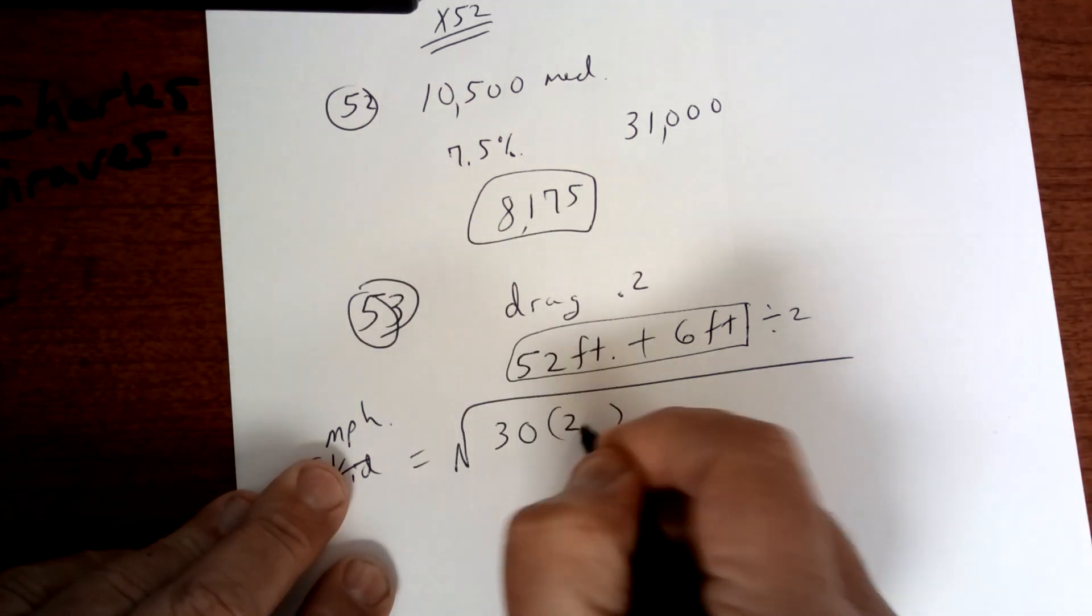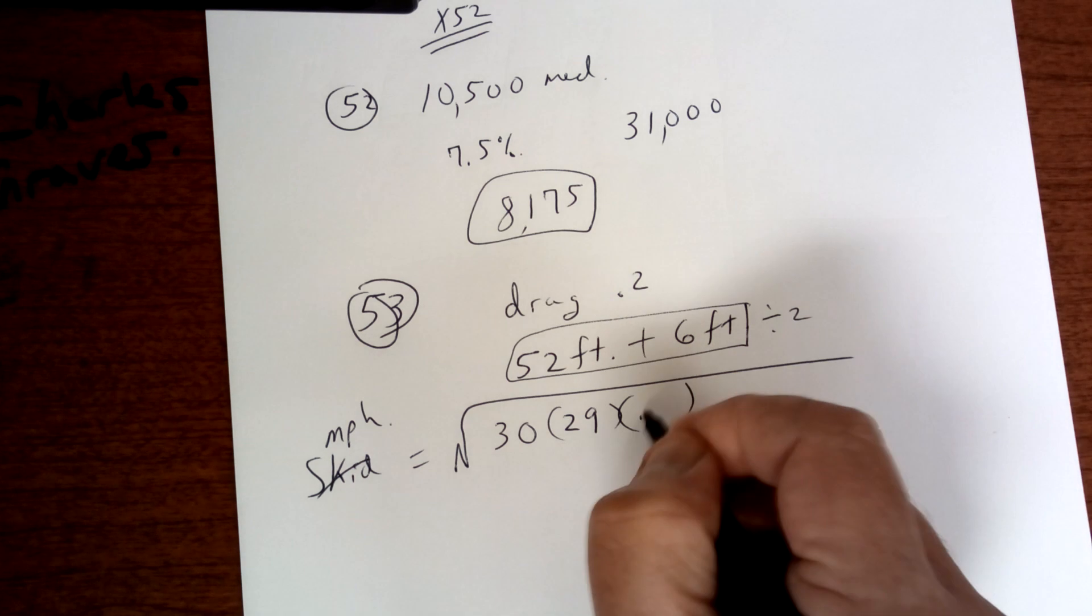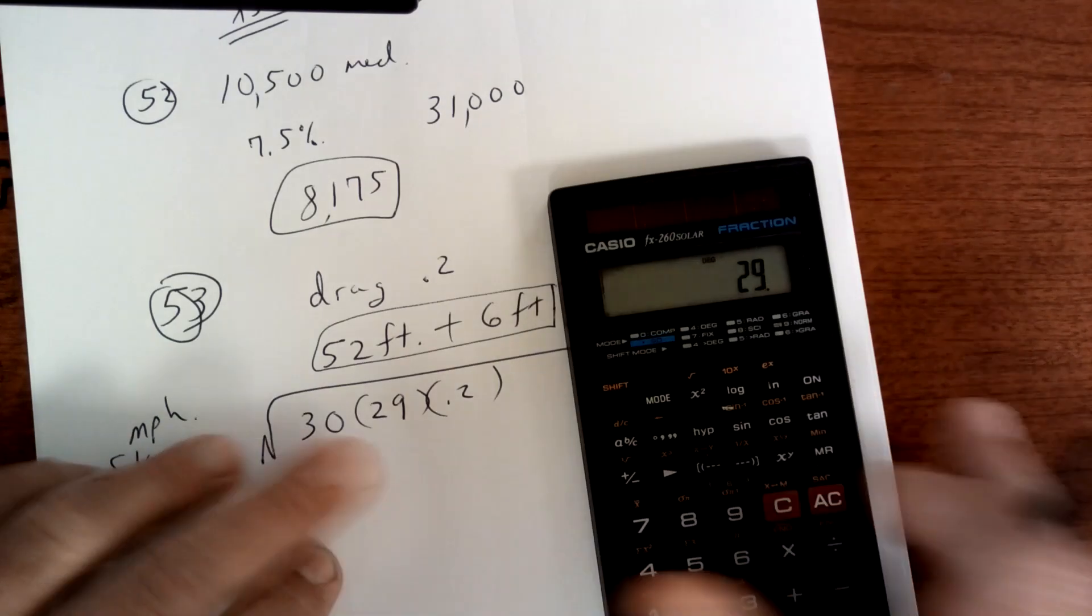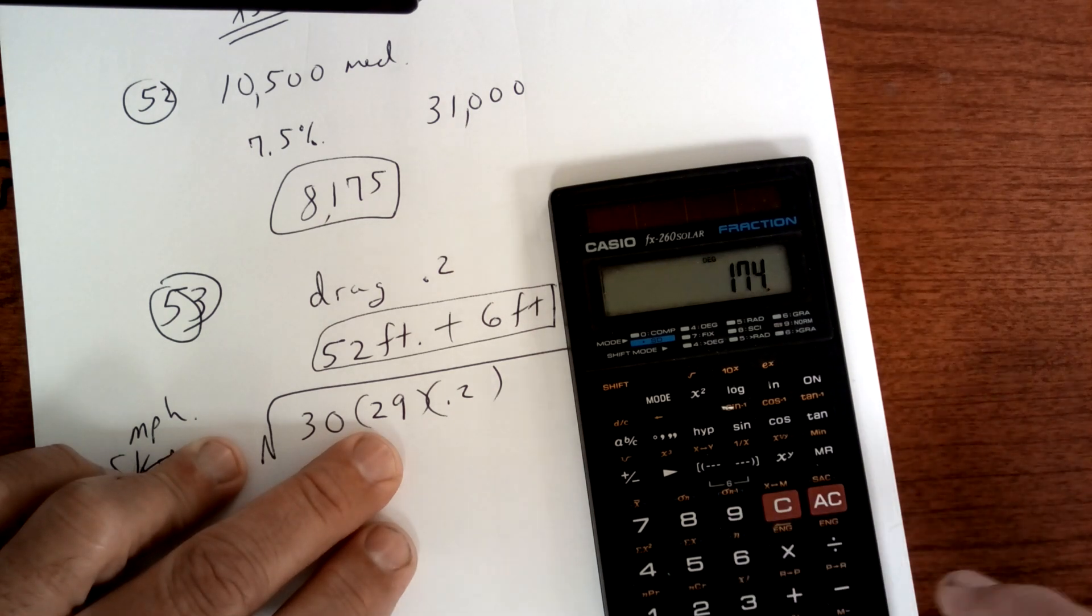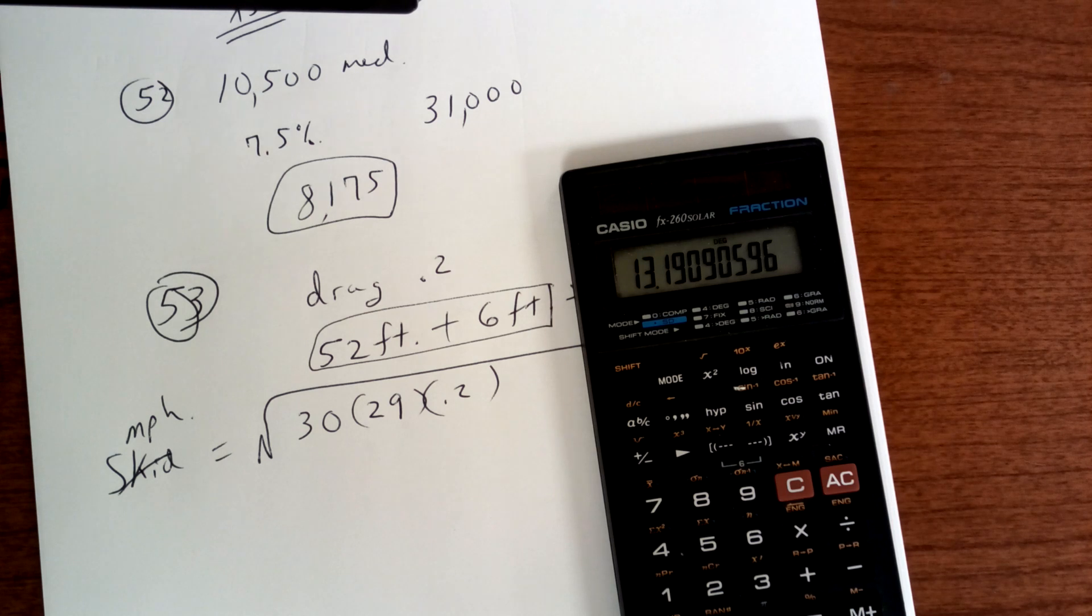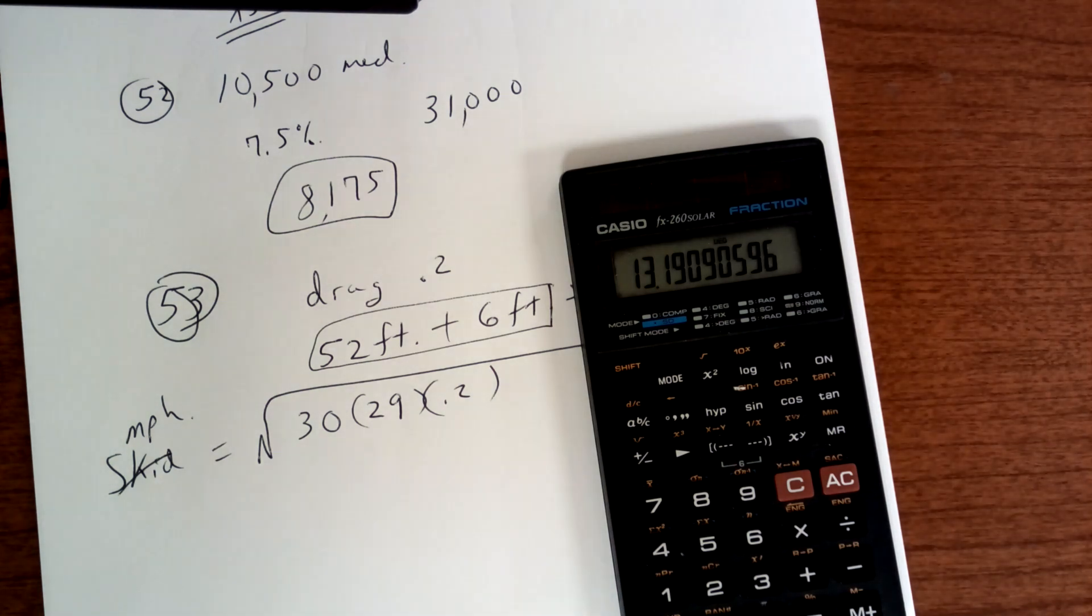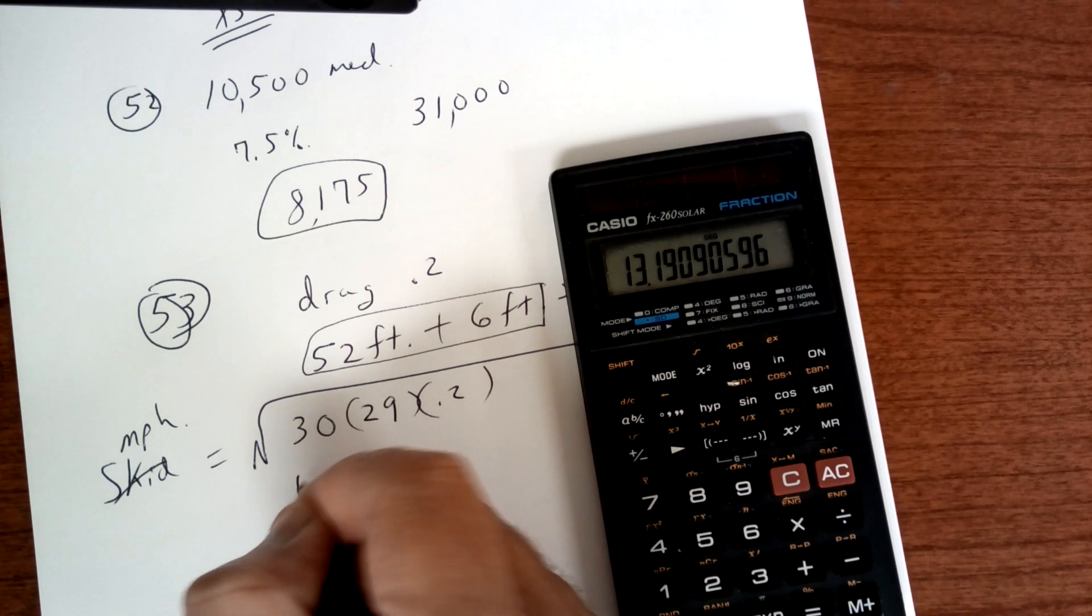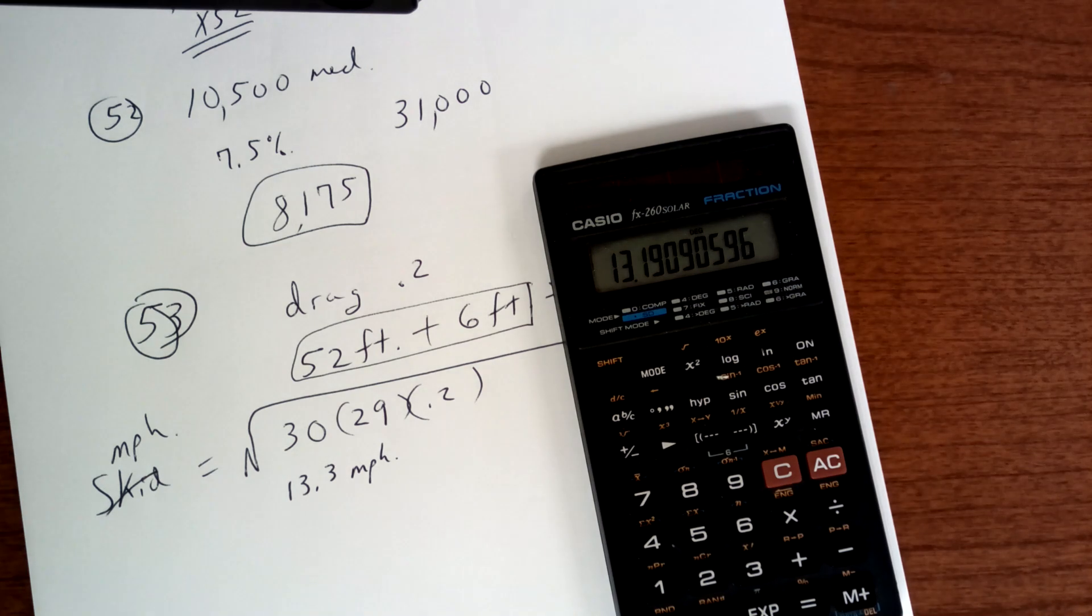Times the drag factor, which is 0.2. Let's see what we get. So we're going to take 29 times 30 times 0.2, press equals, hit shift, and then square root. Seems a little slow there. That one right there, 56, is a 13.3. So 13.3 is the answer on the sheet. Right? Okay, so not very fast at all, but that's how you would do that problem.